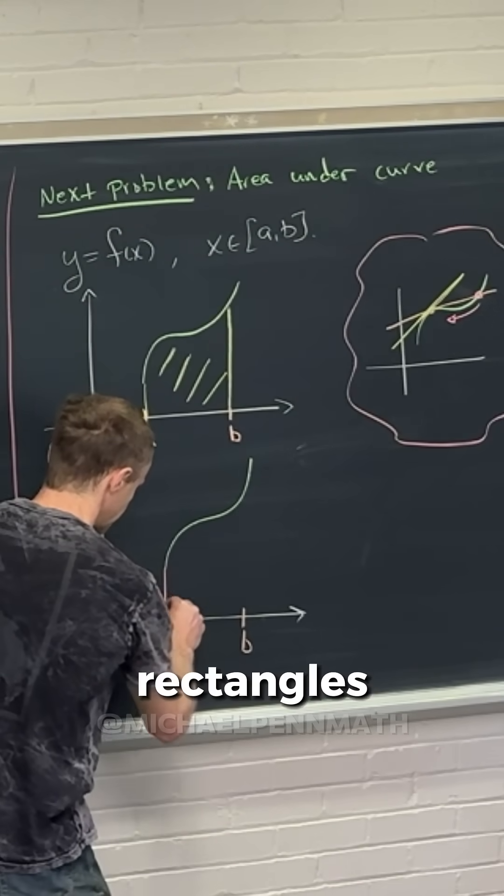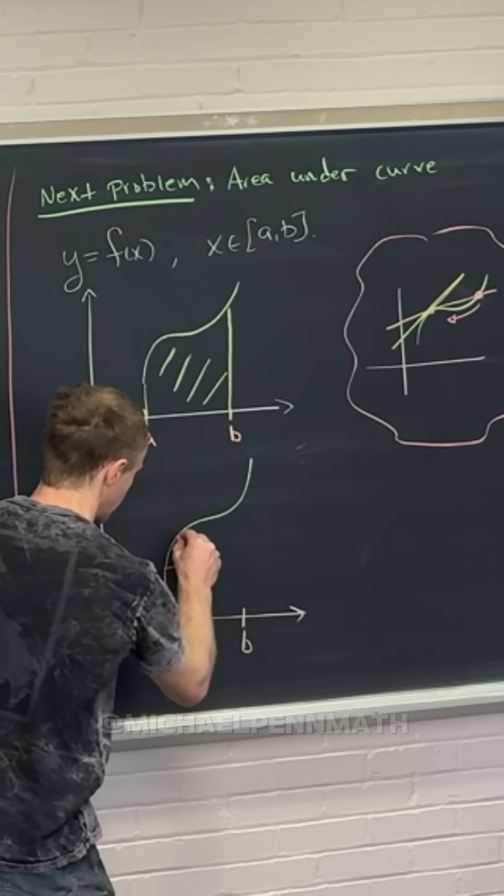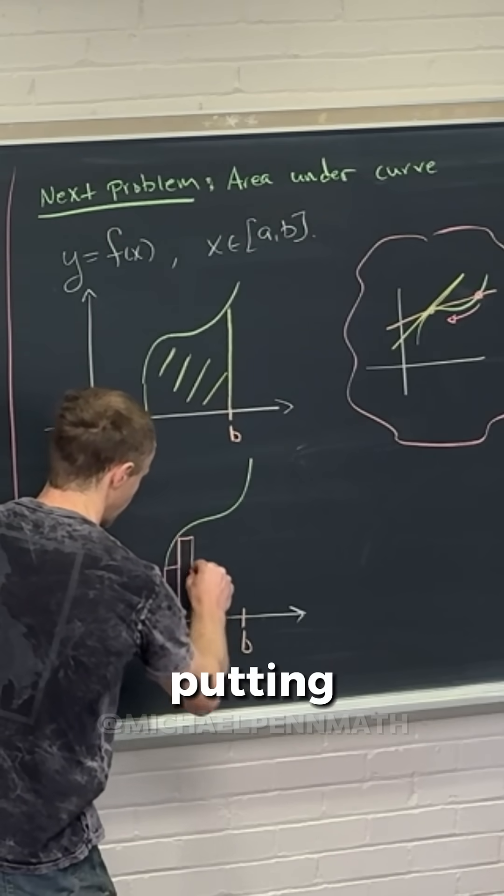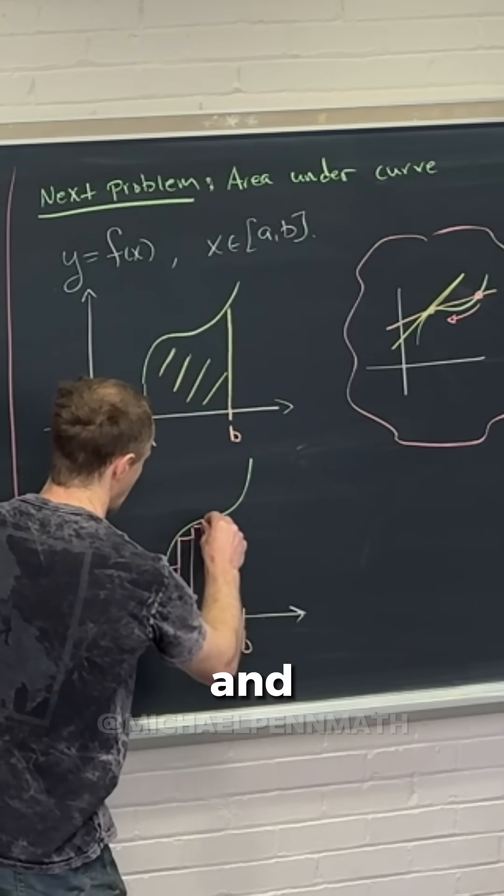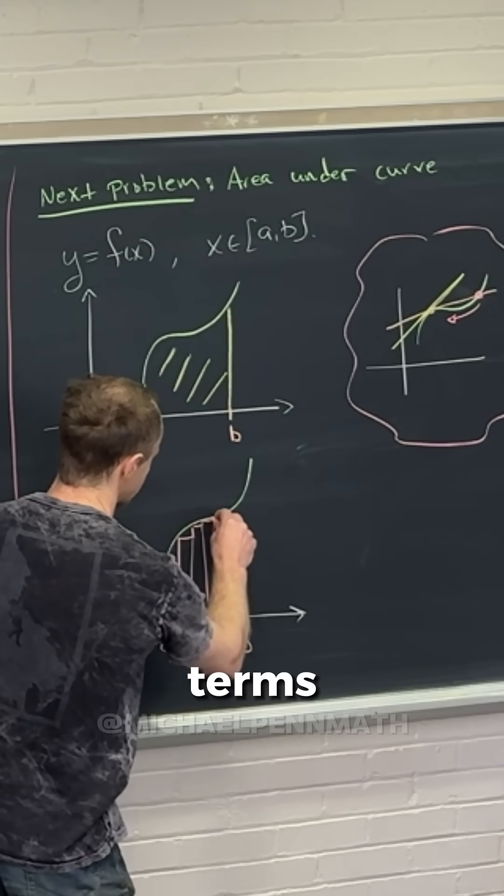What we'll do is we'll put a ton of rectangles under this curve like this. We're putting a ton of rectangles under this curve, and the smaller those rectangles are in terms of their width, the better they approximate the area under the curve.